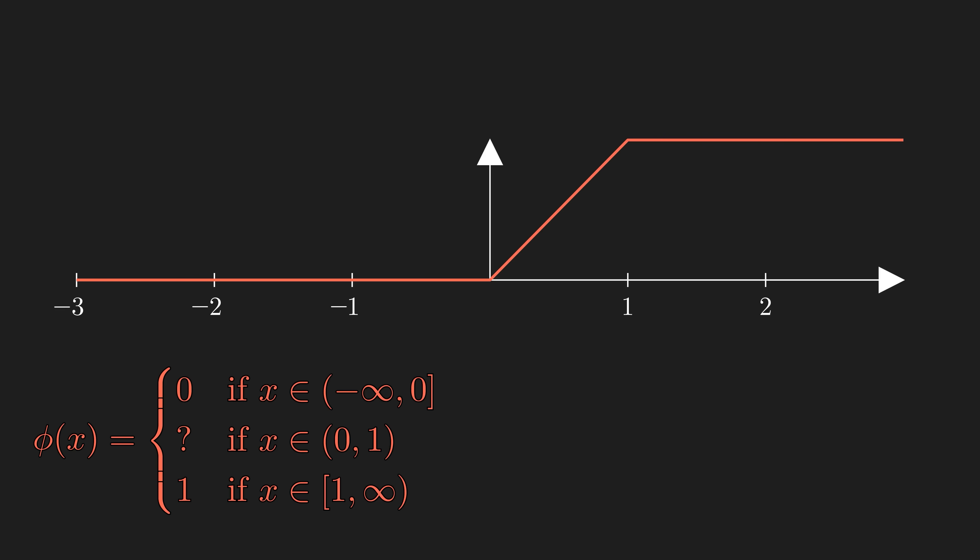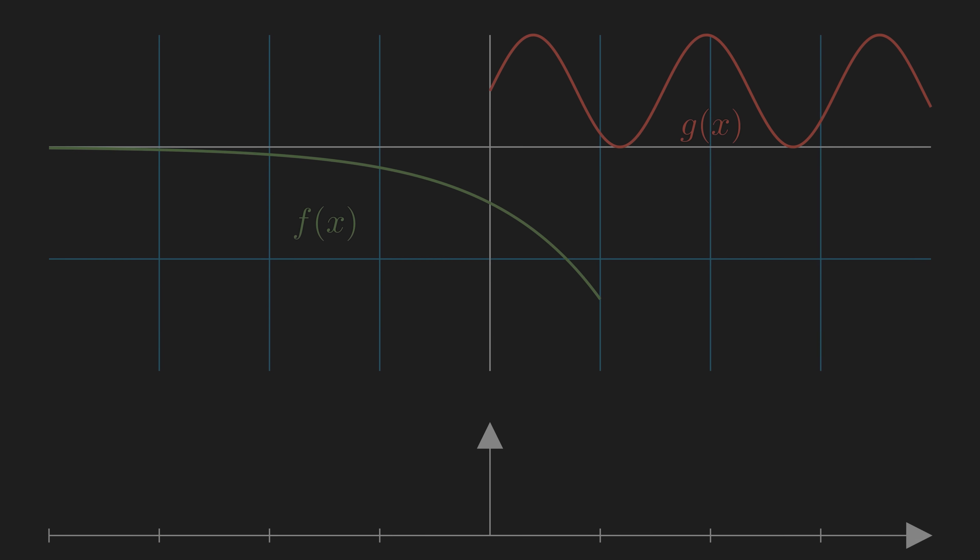We call phi the step function, and we can take 1 minus phi, and we call this the cutoff function. I chose phi to be a linear step function for now, but it can be anything as long as it satisfies continuity and monotonicity.